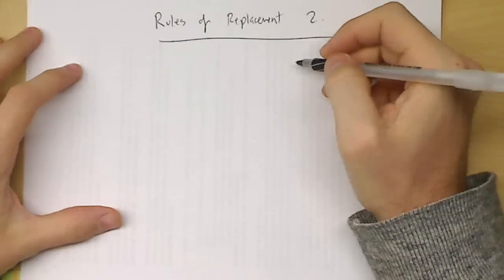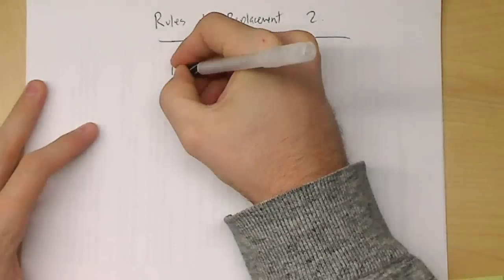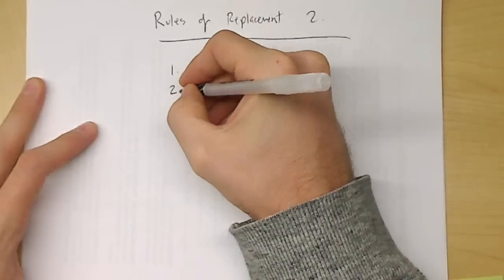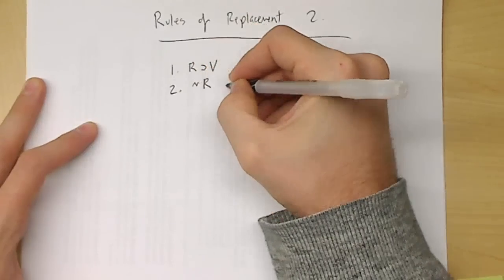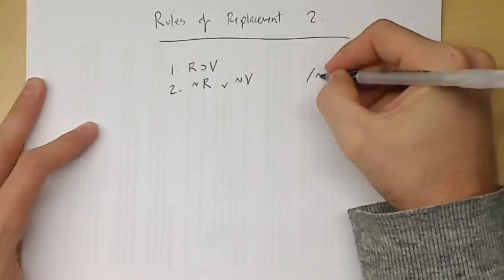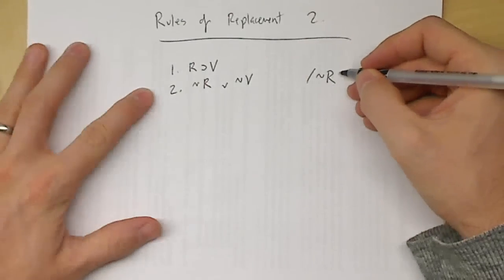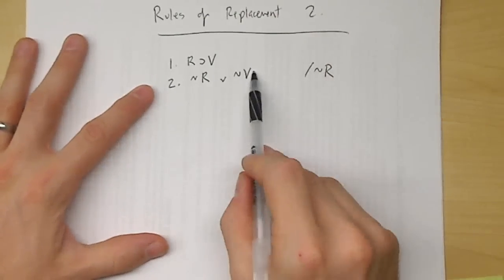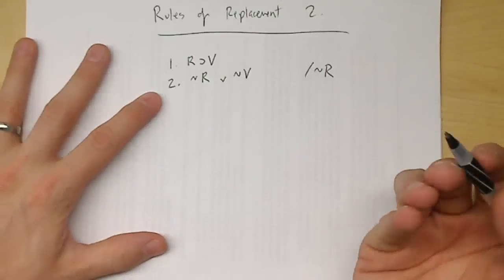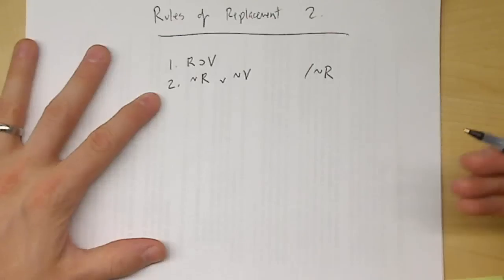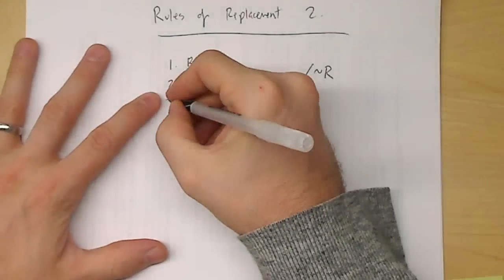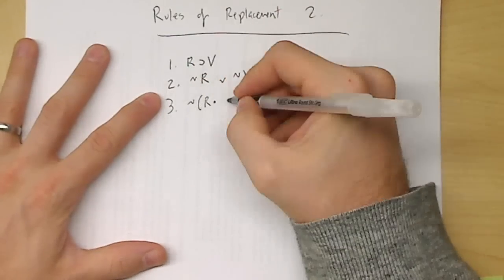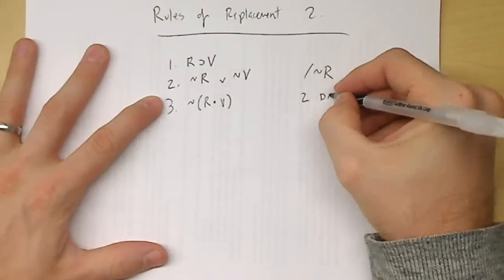Okay, so we're going to do the rules of replacement two. I found a new problem. Here's what it looks like: line one is R→B, line two is ¬R∨¬V, and the conclusion we're looking for here is ¬R. So here's the problem. Immediately, whenever you see a disjunction with two negations, I always think DeMorgans. So let's do that — ¬(R∧V) — that's line two DeMorgans.